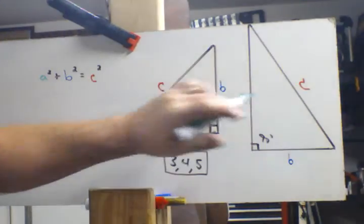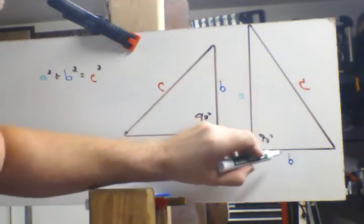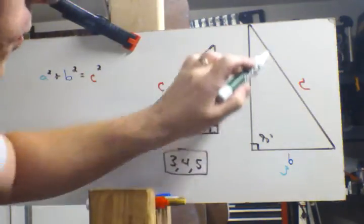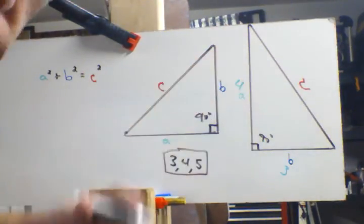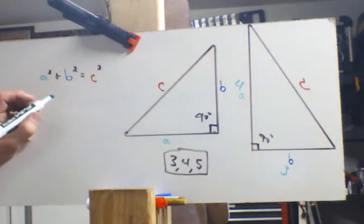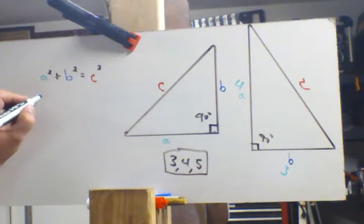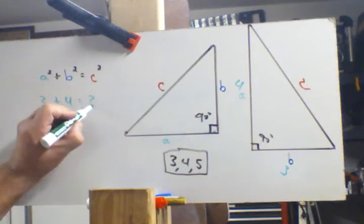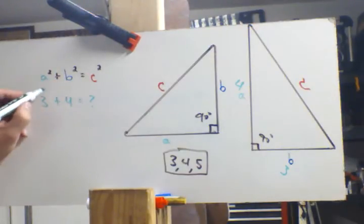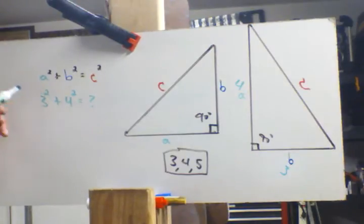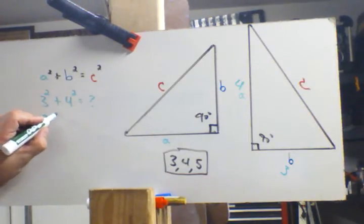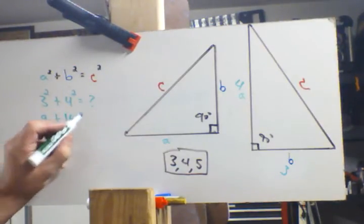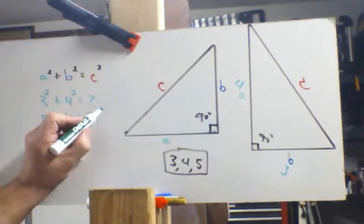We'll use this one as an example. We'll make this one 3, this is 4, you already know this one is going to be 5, but we'll prove it through the theorem. So we have one side which is 3 plus the 4 equals something over here that you don't know. Three squared, that's simply 3 times 3, which is 9.